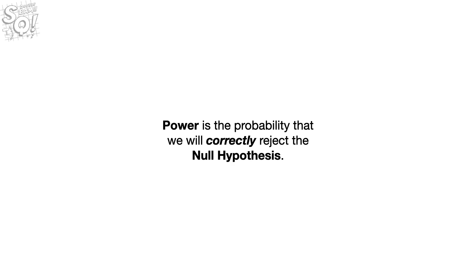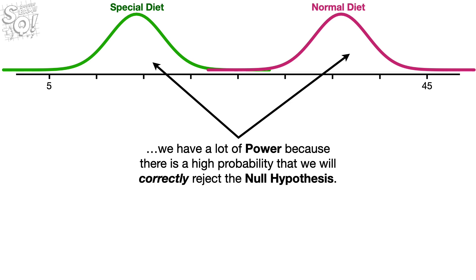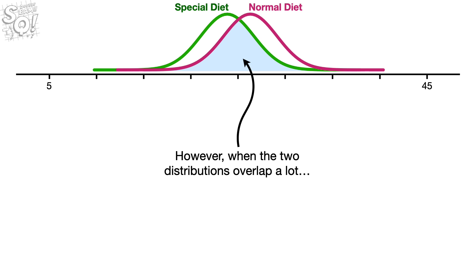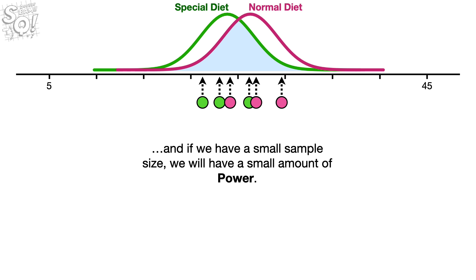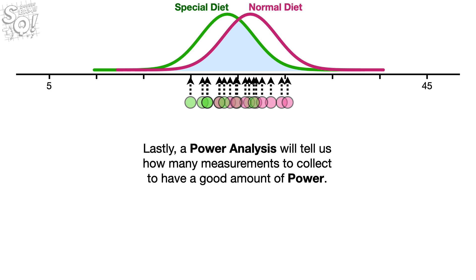In summary, power is the probability that we will correctly reject the null hypothesis. When we have two distributions that have very little overlap, we will have a lot of power because there is a high probability that we will correctly reject the null hypothesis. However, when the two distributions overlap a lot and we have a small sample size, we will have a small amount of power. If we want more power, we can increase the sample size. Lastly, a power analysis will tell us how many measurements to collect to have a good amount of power.